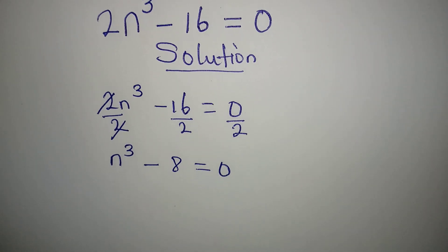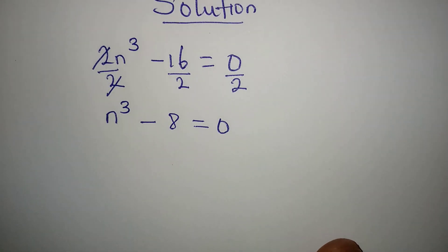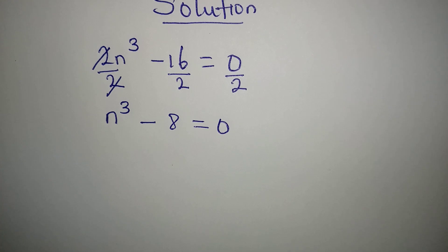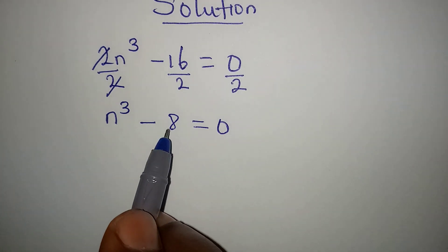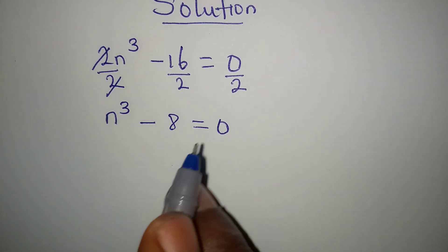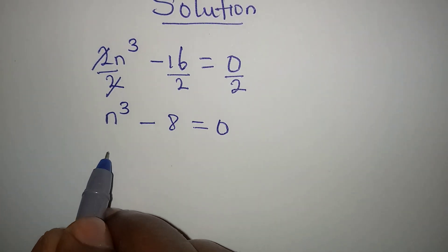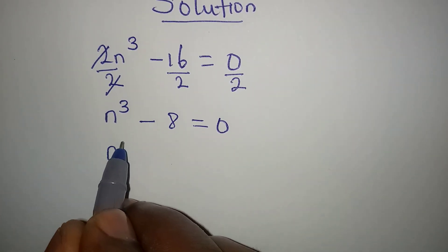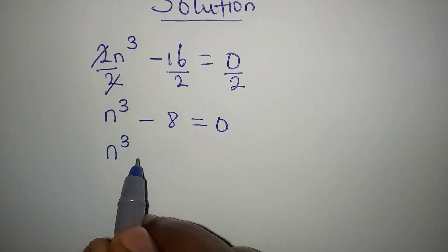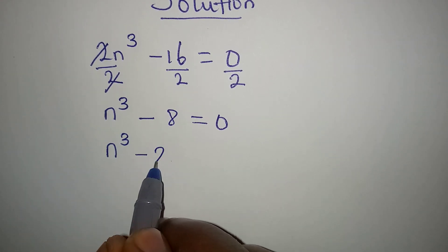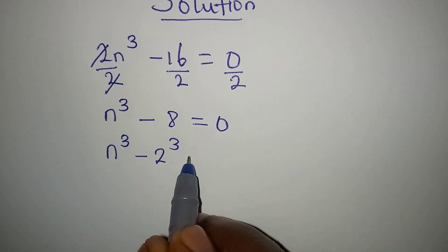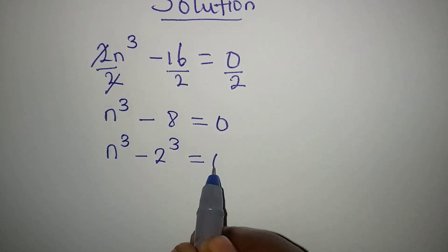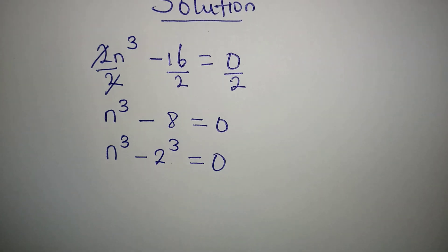Now, the next thing is for us to express 8 in index form. So, n to the power of 3 minus 2 to the power of 3 is equal to 0.